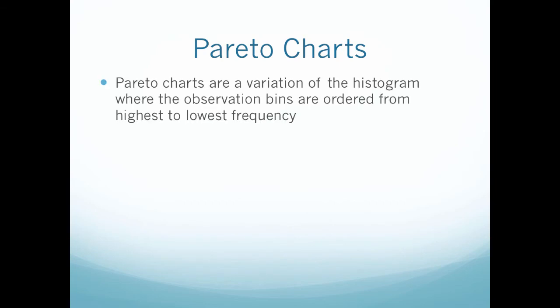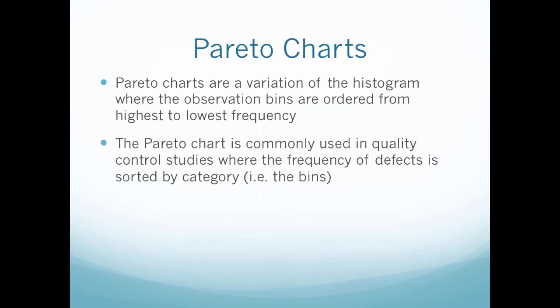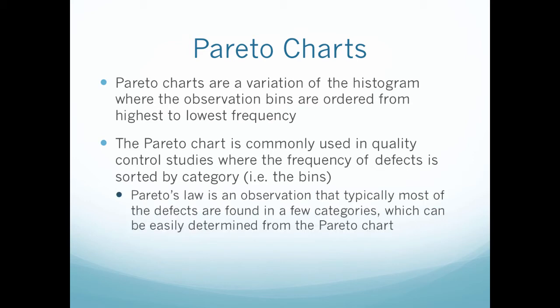Pareto charts are a variation of the histogram where the observation bins are ordered from highest to lowest frequency. The Pareto chart is commonly used in quality control studies where the frequency of defects is sorted by category — in other words, the bins. It's called a Pareto chart because Pareto's law observes that typically most of the defects are found in a few categories, which can easily be determined from the chart.